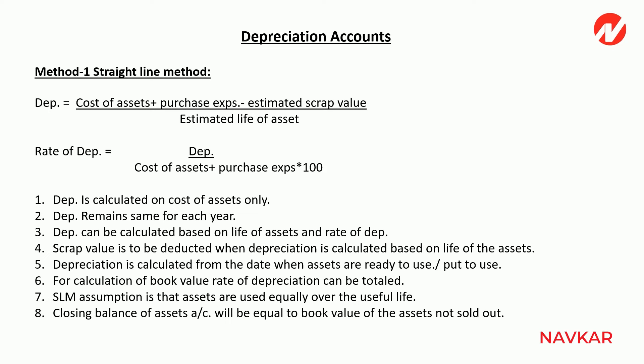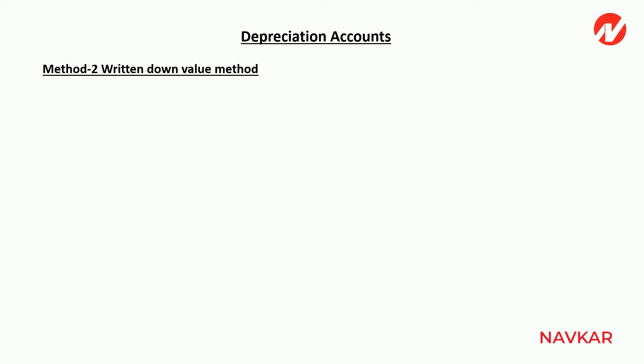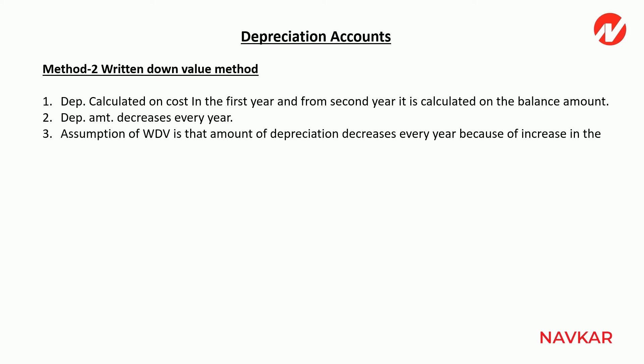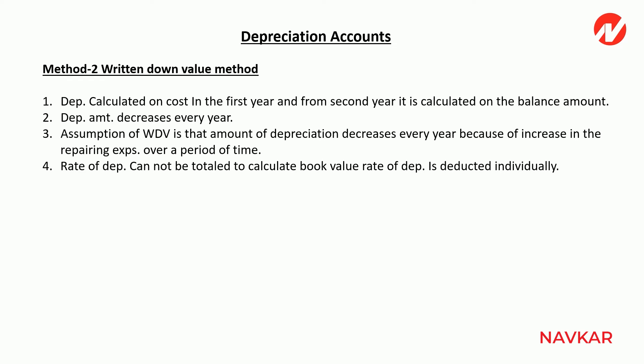That's it for method one. Method number two is the Written Down Value (WDV) method. Point one — depreciation is calculated on cost in the first year, and from the second year it is calculated on the balance amount. Point two — depreciation amount decreases every year. The assumption of WDV method is that depreciation decreases each year because repairing expenses increase each year, keeping the total effect on P&L the same. Point four — rate of depreciation cannot be totalled; it must be applied individually for calculation of book value.